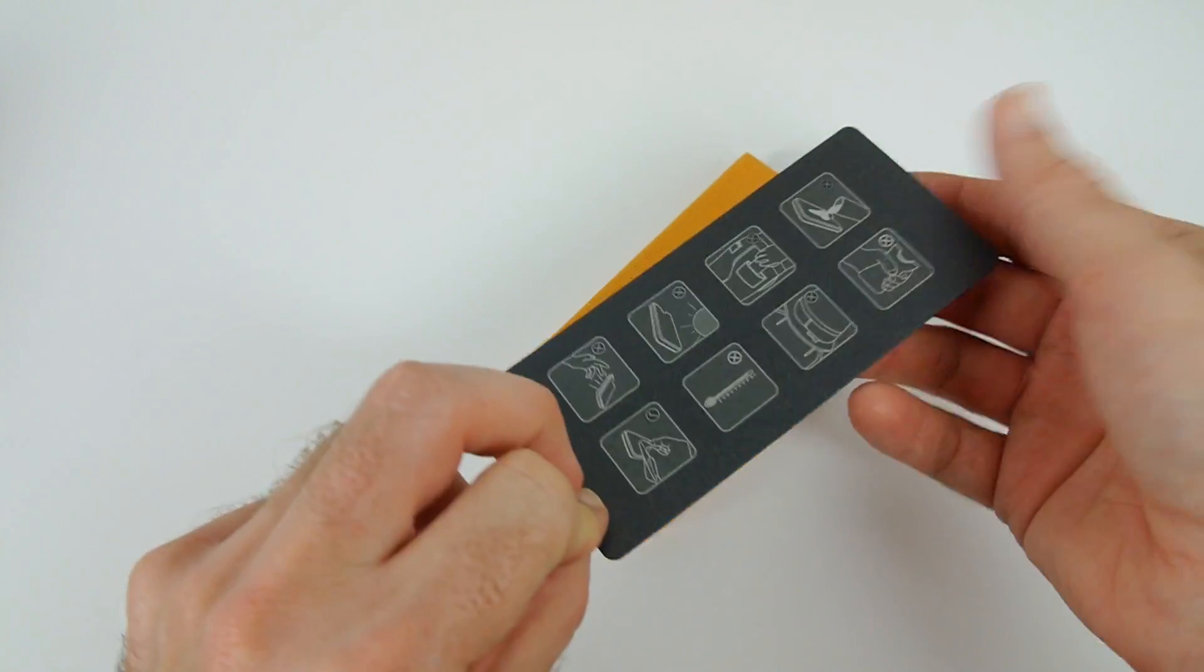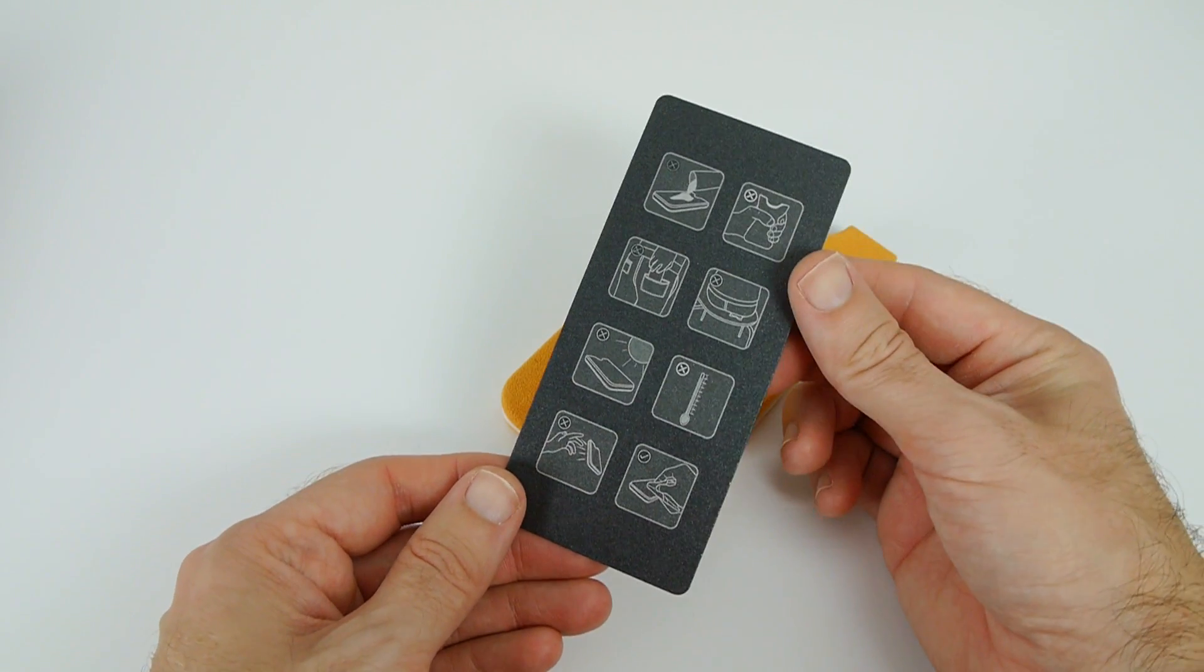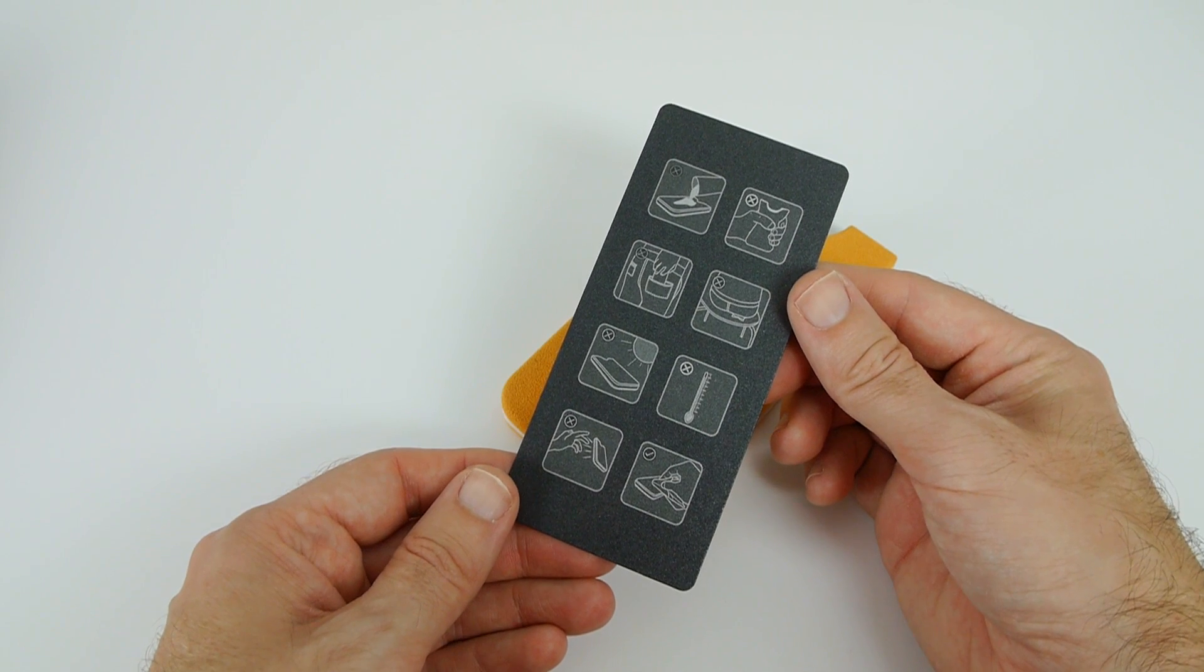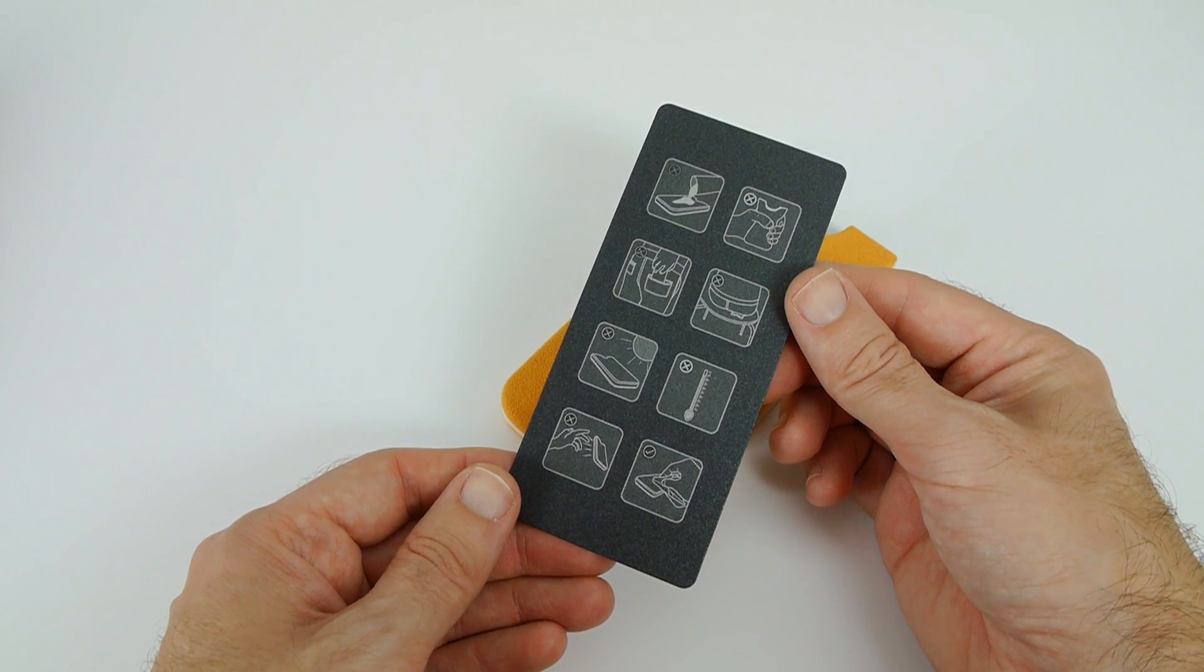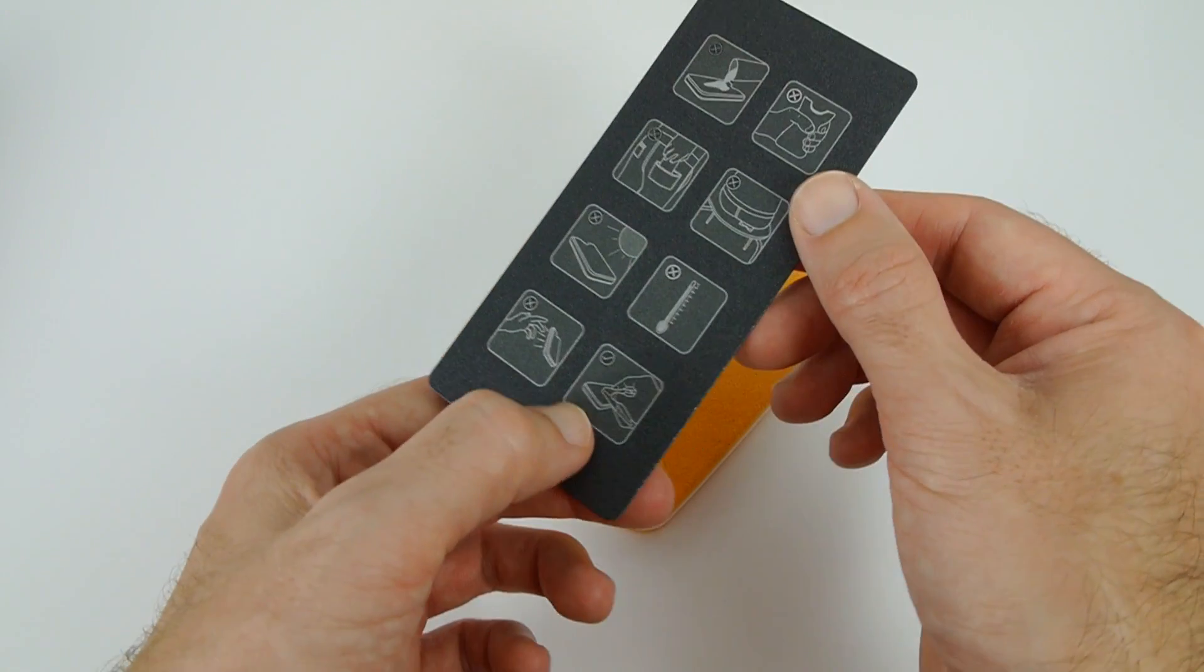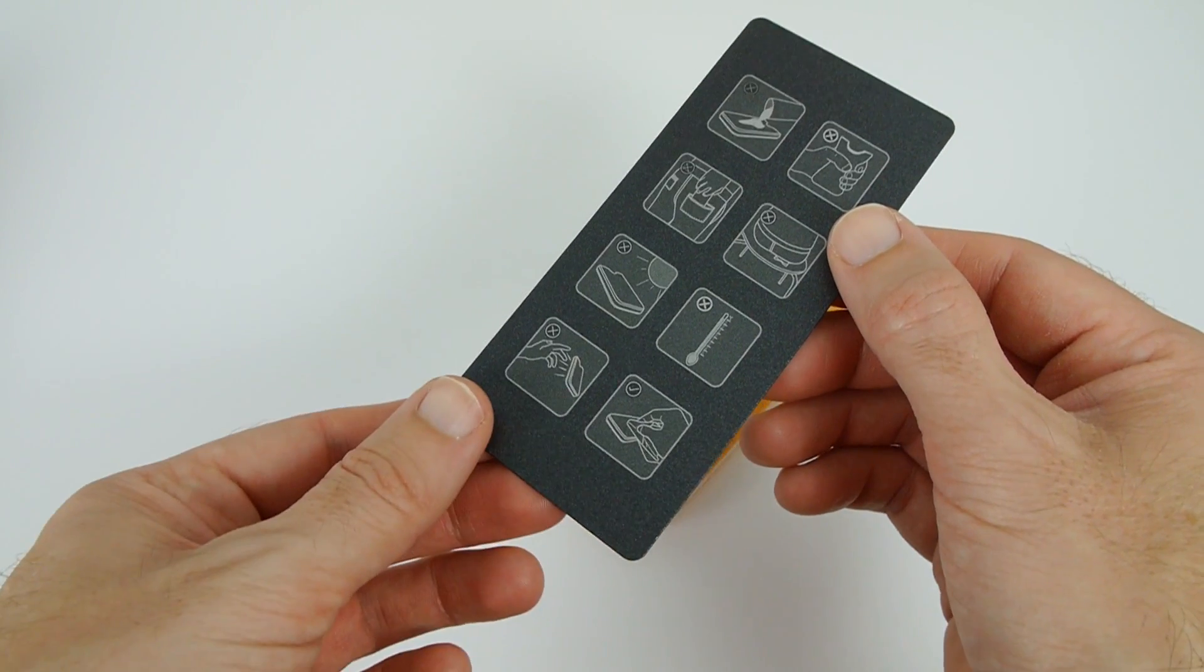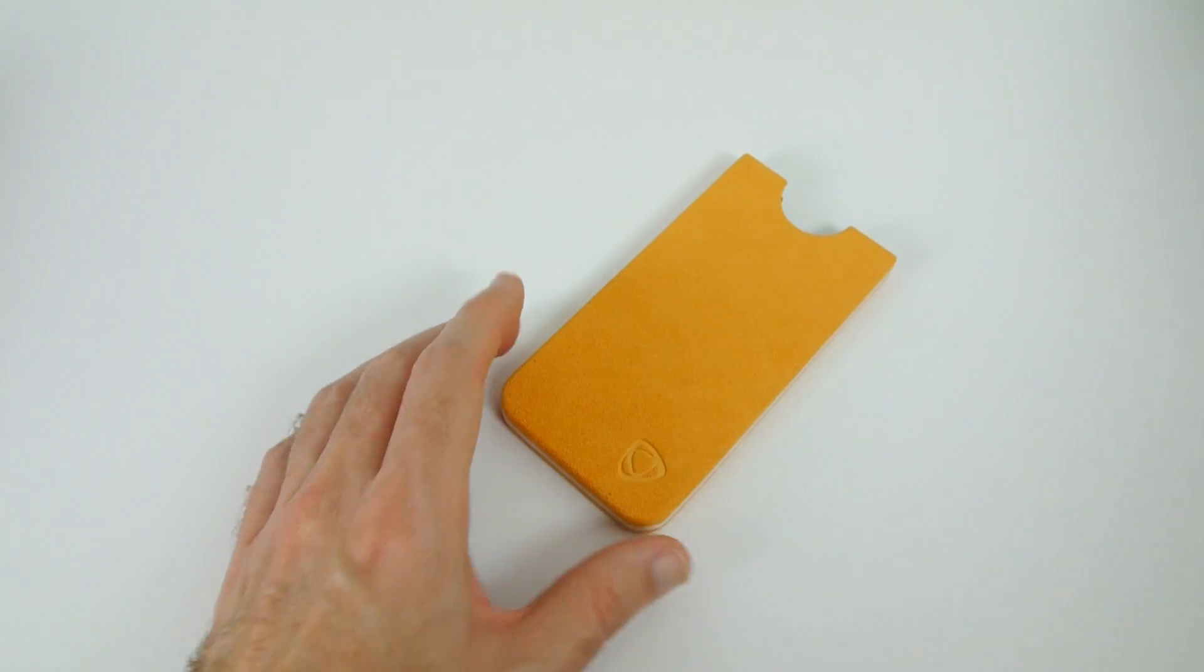So this shows you how to use the case. It also shows you that it's not liquid repellent and don't squash it. Don't put it in your back pocket. Don't put it under direct sunlight. Do not throw your phone but you can clean the case with what looks like a soft cloth or a damp cloth just to clean the outside.